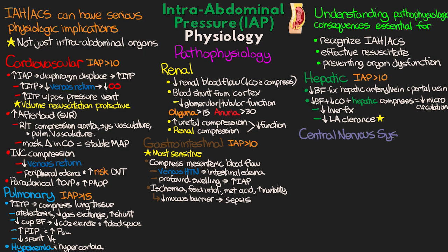Now let's talk about the central nervous system. Cerebral perfusion is also influenced by intra-abdominal pressure. The brain consists of four compartments: the brain tissue itself, the vessels, the bone, and the cerebrospinal fluid (CSF). Any increases in pressure in one compartment are carried throughout the others. Slow chronic increases can actually be compensated for, but acute drastic rises can lead to significant increases in intracranial pressure. Elevations in intra-abdominal pressure, as well as intra-thoracic pressure, both lead to increases in ICP and significant reductions in cerebral perfusion pressure, persisting as long as intra-abdominal pressure is elevated.